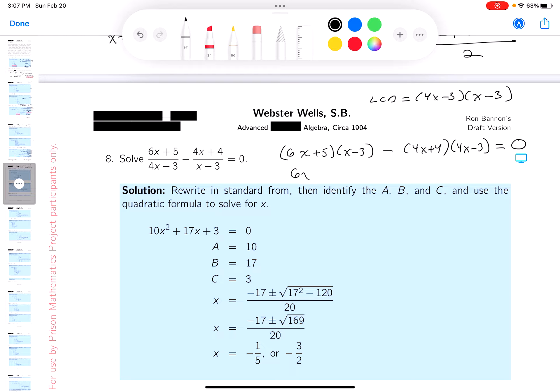We get 6x squared. You can get minus 18 plus 5, which is minus 13x minus 15 minus, let's do this guy over here. That's going to be 16x squared, and then you get minus 12 plus 16, which will be 4x, and you get minus 12. I've got to combine like terms.